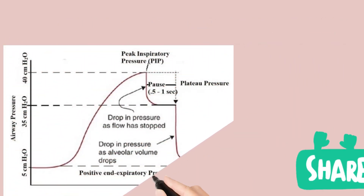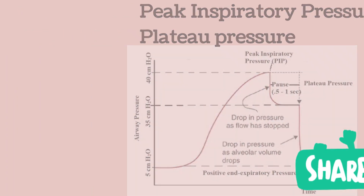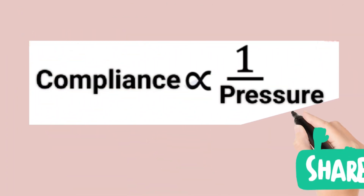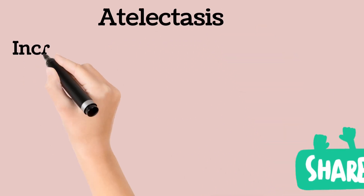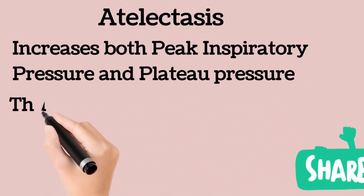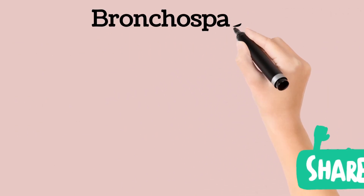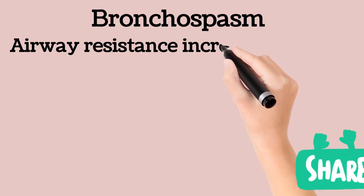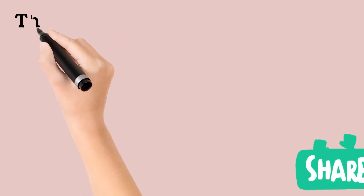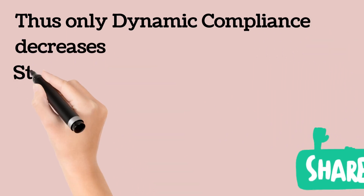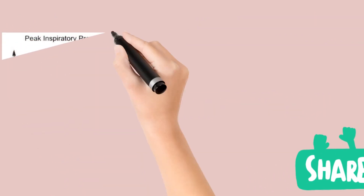Atelectasis causes an increase of both plateau and peak inspiratory pressure. Since both pressures are increased, the calculated static and dynamic compliance measurements are decreased. In the case of bronchospasm, airway resistance is increased and peak inspiratory pressure is increased, but the plateau pressure stays unchanged. Since only peak inspiratory pressure is increased, dynamic compliance is decreased, while static compliance remains the same because there is no change in the plateau pressure.